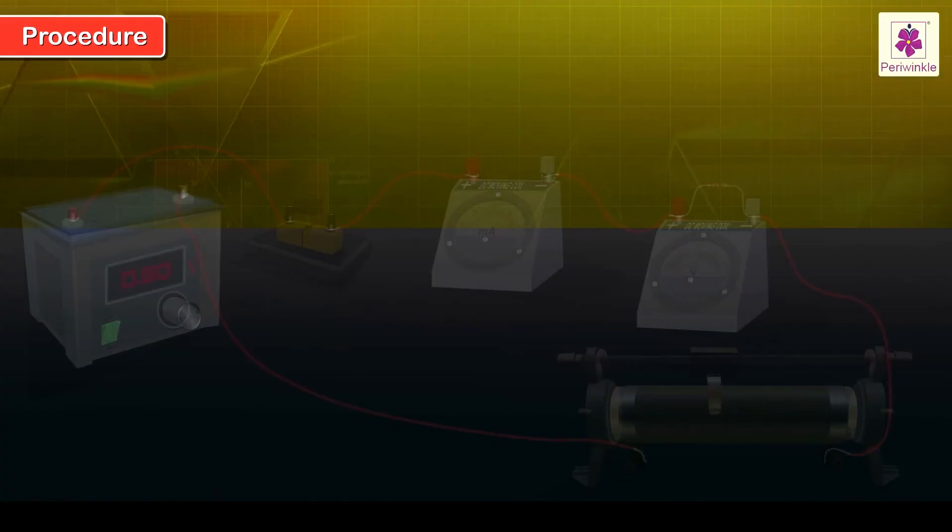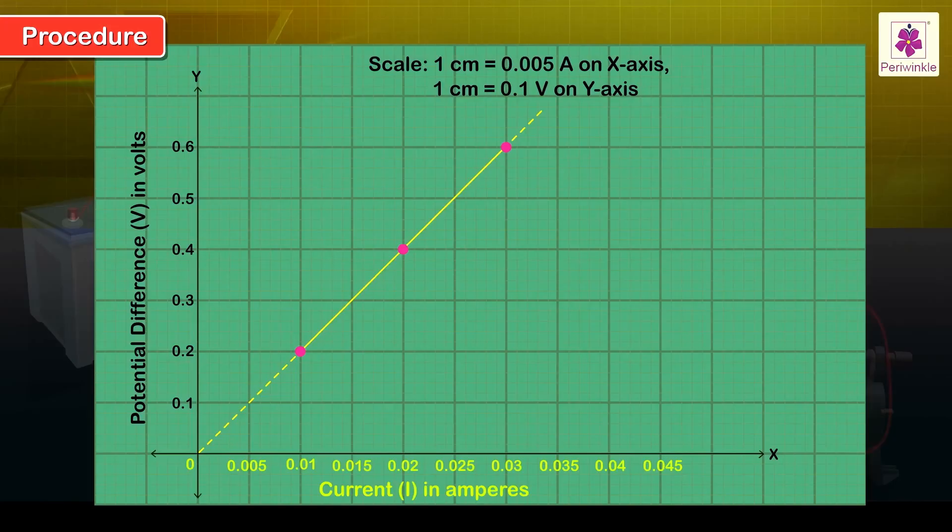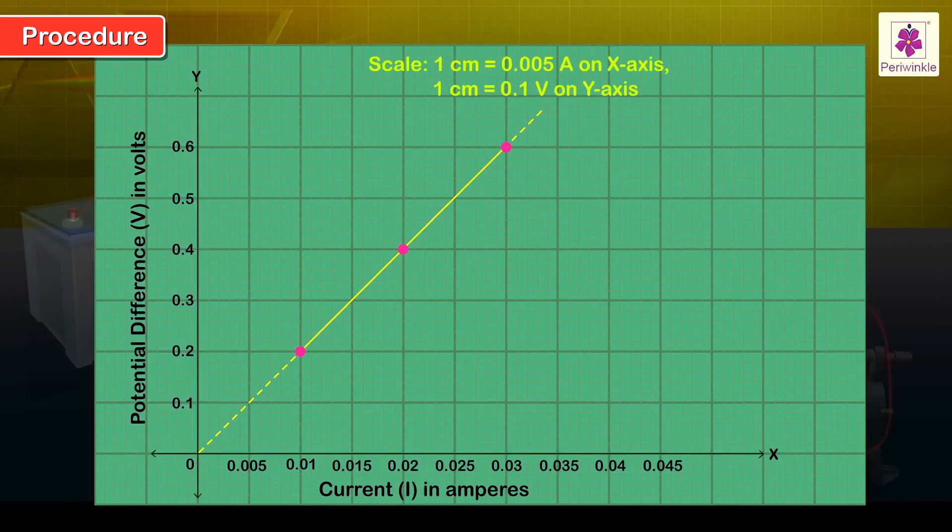Step 9: Draw a graph by plotting the values of current I on x-axis and values of PD on y-axis after choosing suitable scales for both the axes.